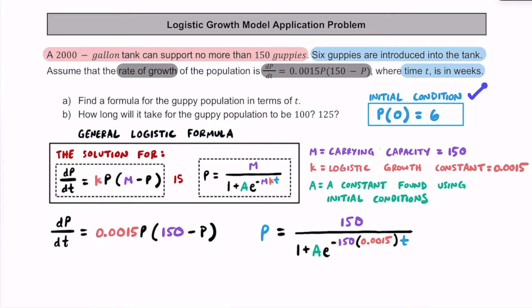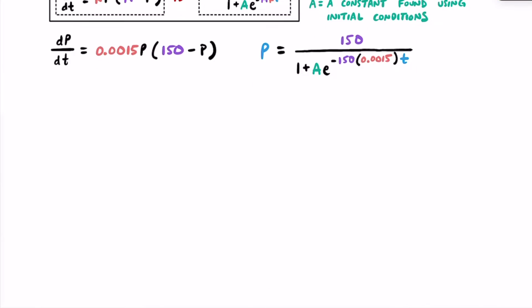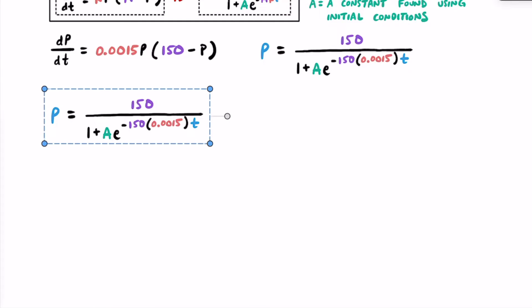In a moment we're going to use the initial condition where the population at a certain time — in this case the initial condition — says that at 0 weeks, we had a population of 6 guppies. So let's take this equation and solve for A. Getting rid of t and p, we know for the initial conditions that t is going to be 0, so we put a 0 in the exponent, and at 0 weeks we had a population of 6, so we put 6 in for p.